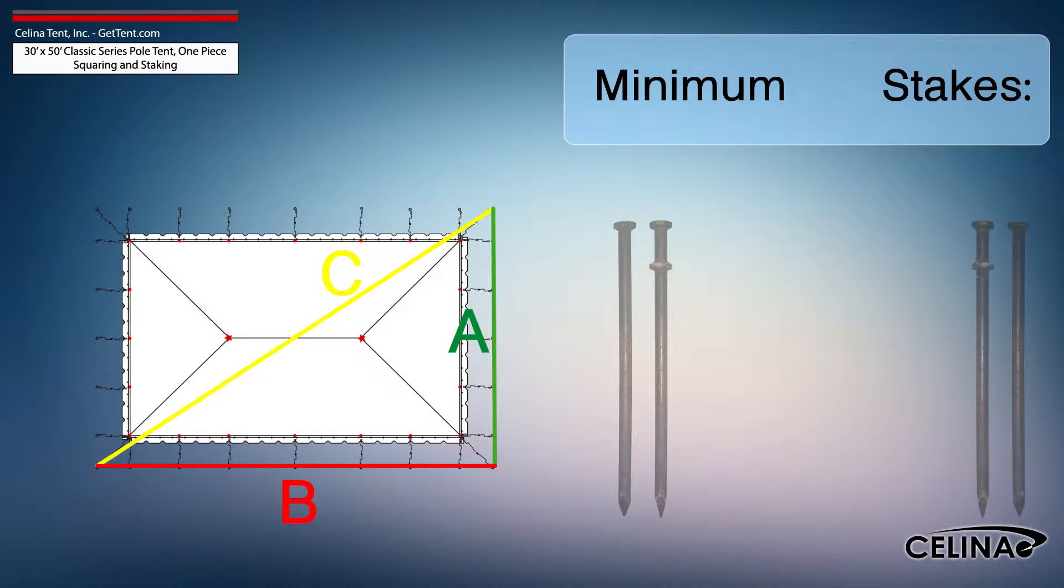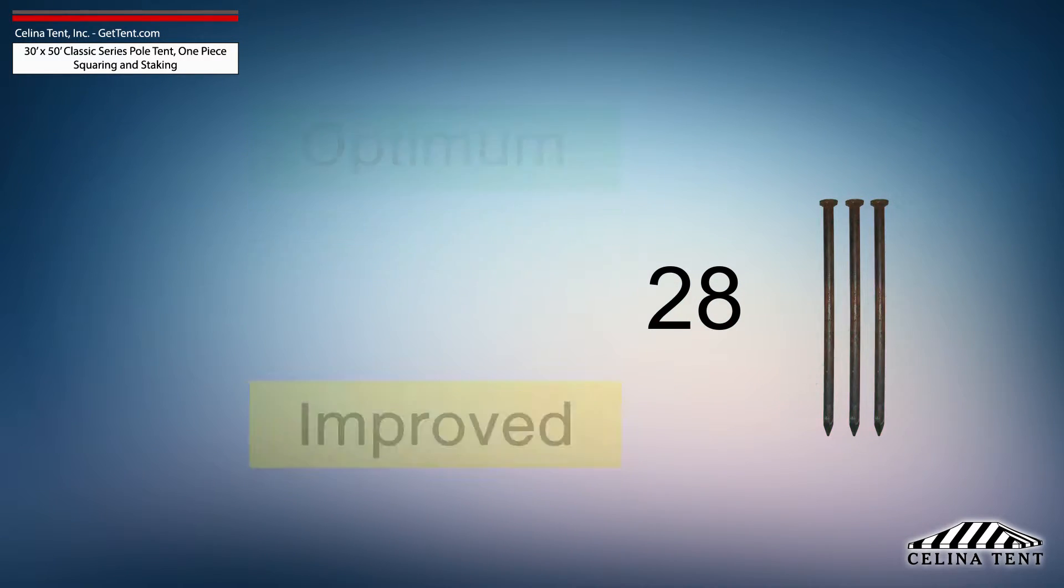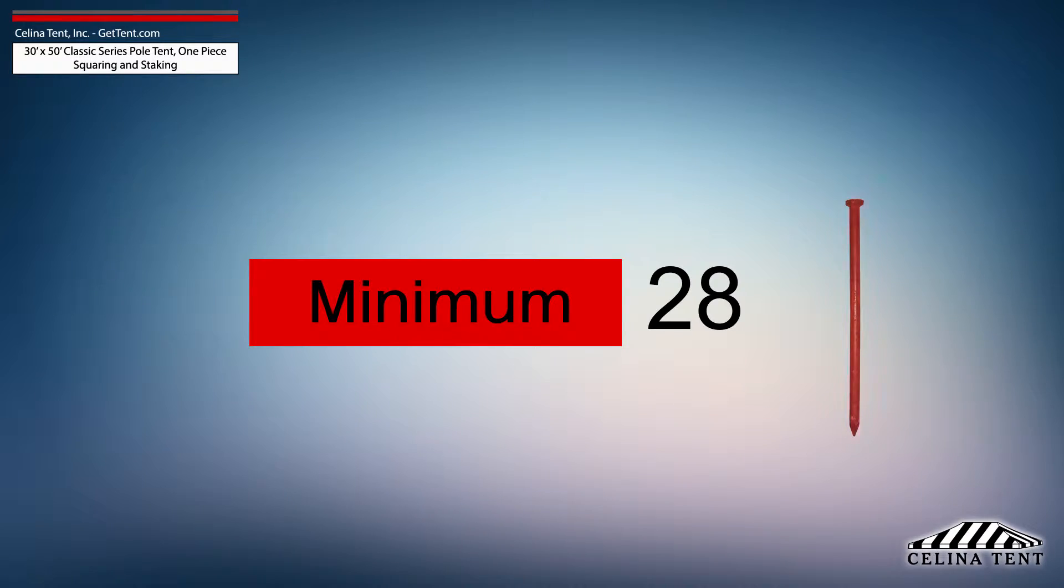Celina recommends that a 30-foot by 50-foot classic series pole tent receives a minimum of 28 stakes: 3 stakes for each corner pole and 1 stake for each side pole. This amount of stakes provides the minimum amount of security for a pole tent of this size.